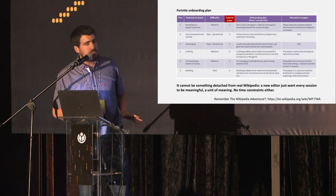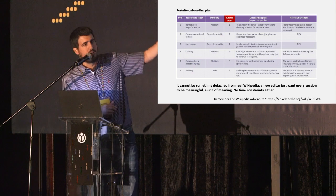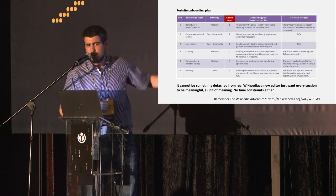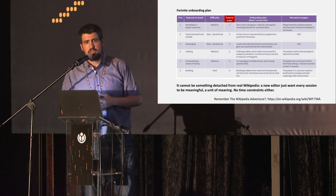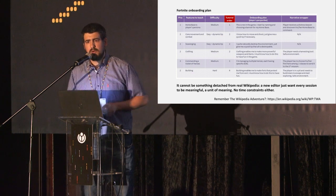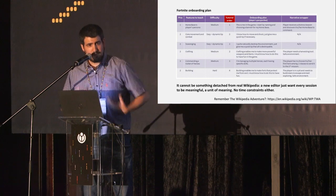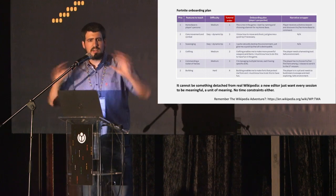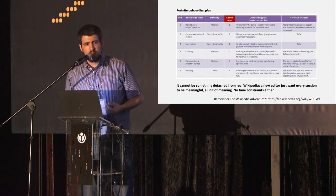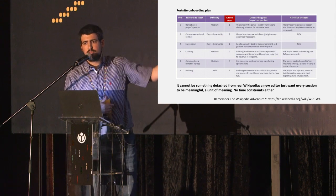What the onboarding plan proposes is to divide each mechanic into a step: first you learn to move the character, then to create an object, to shoot if it's a shooting game, to create tools. Imagine that for Wikipedia. Why does a photographer need to learn about a particular policy? Why should all users go along the same learning path? Sometimes my students, when I tell them to contribute to Wikipedia, say: 'Wow, this is like a jungle. There are so many things to learn and so many policies — I don't know where to start.' They feel overwhelmed.